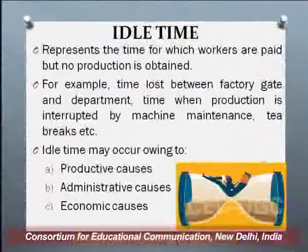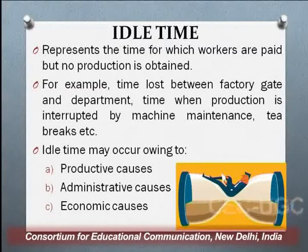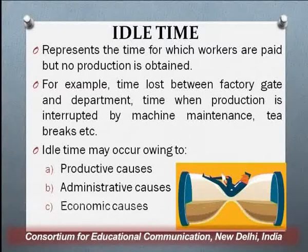To summarize what we have discussed on overtime: what overtime is, what are the implications of overtime, how you deal with overtime in cost accounting, and that overtime cost should be controlled. If overtime is due to normal pressure of work, charge to production overheads; if it is because of abnormal reasons, charge to the costing profit and loss account. The overtime premium especially should be properly controlled so that there is a check on it.